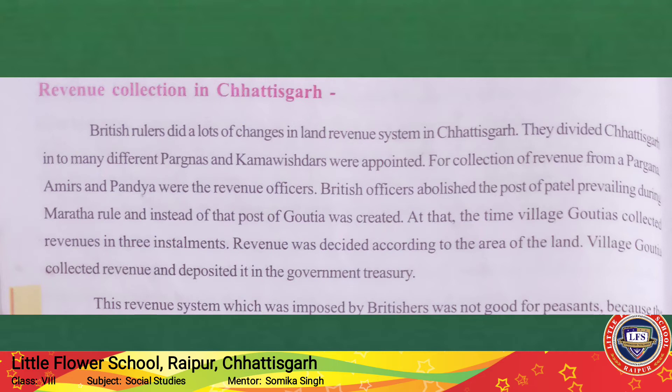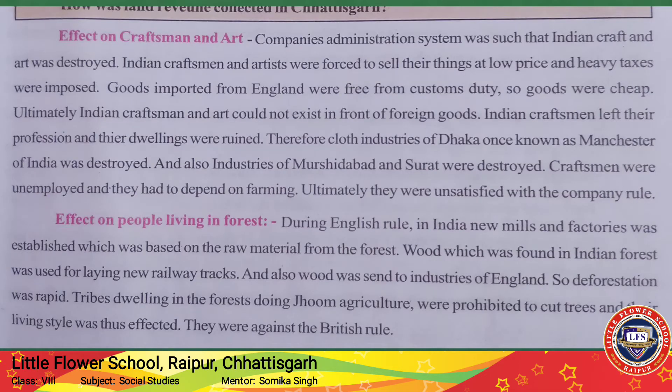They collected revenue according to the area of land, and all that revenue was deposited in the government treasury. The British started charging very high rate revenue, but the poor farmers could not pay such a large amount, so they started borrowing from the zamindars. When they could not repay, the zamindars would seize their lands.